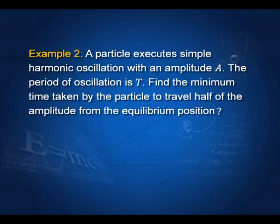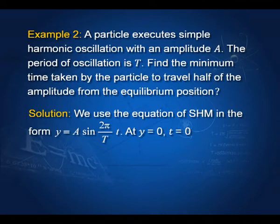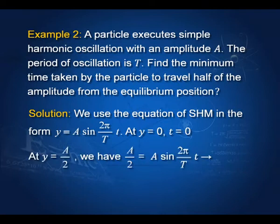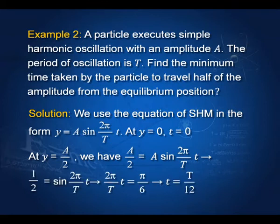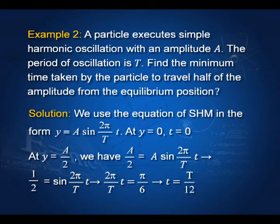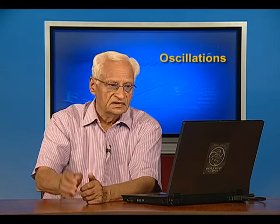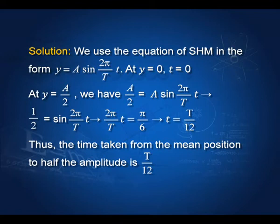Example 2: A particle executes SHM with amplitude a and period T. Find the minimum time for the particle to travel half the amplitude from the equilibrium position. Writing y = a sin(2π/T · t), at y = 0, t = 0. At y = a/2, we get ½ = sin(2π/T · t), which holds when 2π/T · t = π/6. Solving, t = T/12. The particle takes one-twelfth of the total time period to cover half the amplitude.